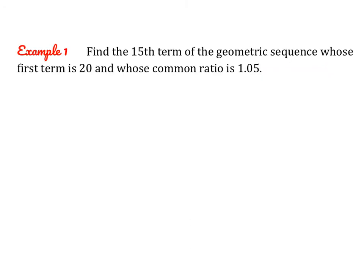Let's try an example together. This one asks us to find the 15th term of the geometric sequence whose first term is 20 and whose common ratio is 1.05. To find the 15th term, rather than starting with 20 and finding the next term all the way up to the 15th, we can make our equation.